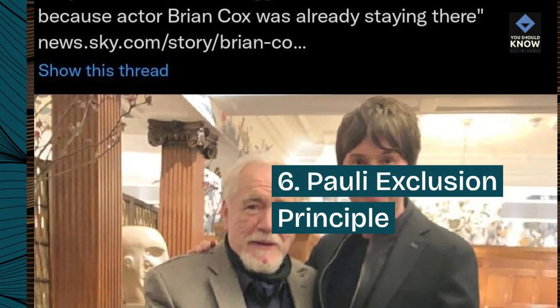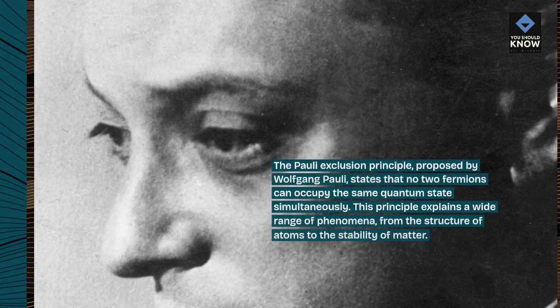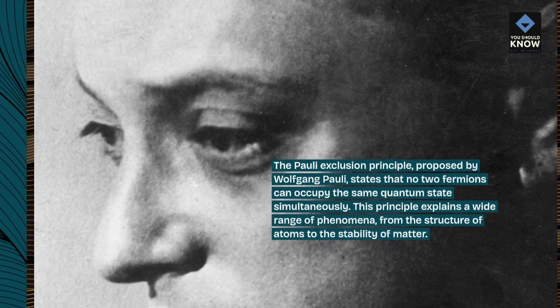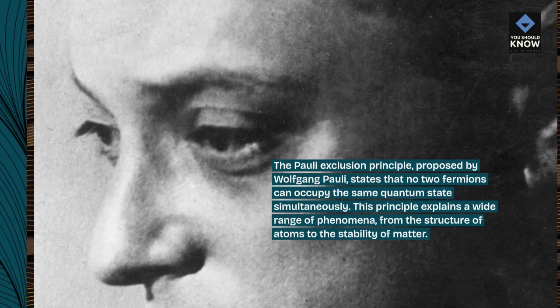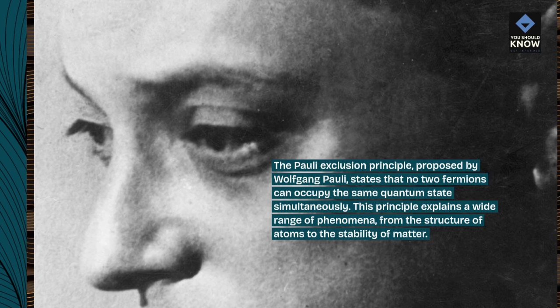6. Pauli Exclusion Principle. The Pauli Exclusion Principle, proposed by Wolfgang Pauli, states that no two fermions can occupy the same quantum state simultaneously. This principle explains a wide range of phenomena, from the structure of atoms to the stability of matter.